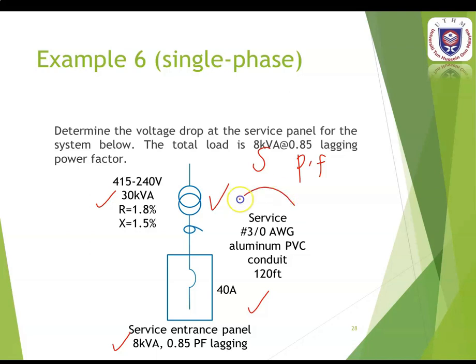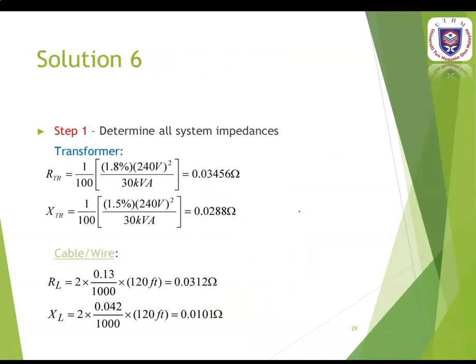This system uses a cable 3/0 AWG aluminum PVC conduit with the length of 120 feet. To calculate the percentage voltage drop, there are 5 steps to consider. The first step is to determine all system impedances. In this system we have two components: the transformer and the cable or wire.